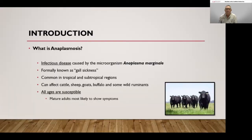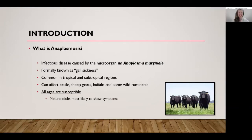Anaplasmosis is an infectious disease caused by the microorganism Anaplasma marginale. This disease was formerly known as gall sickness. It's common in tropical and subtropical regions of the world. The southeastern United States is classified as a subtropical region, so it is a common disease agent in our region.